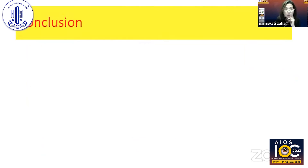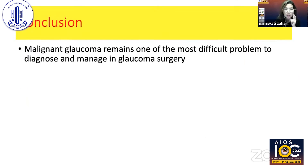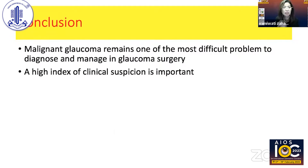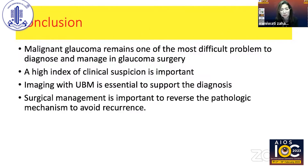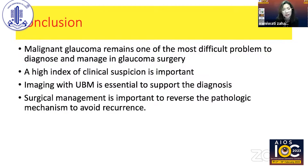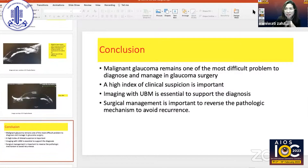In conclusion, malignant glaucoma remains one of the most difficult problems to diagnose and manage in glaucoma surgery. A high index of clinical suspicion is important; imaging with UBM is essential to support the diagnosis. Surgical management is important to reverse the main pathological mechanism and avoid recurrence, because medical treatment alone may require the patient to remain on atropine for at least a year, if not a lifetime. Thank you.